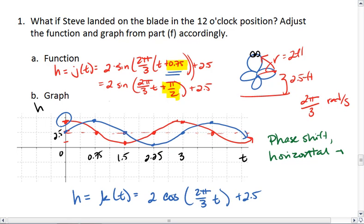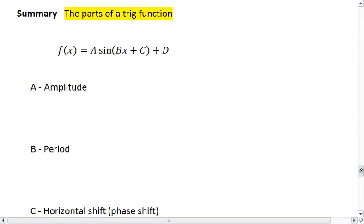What it does is it changes where we start. This leads us to a summary of the parts of a trig function. Every trig function is written as A times the trig function, in this case sine, of Bx plus C, plus D. A is your amplitude, this is the distance, and I'm going to sum this all up in the next clip.